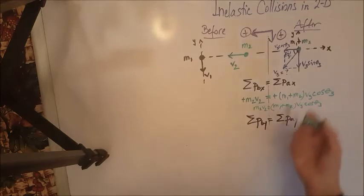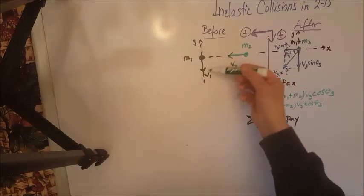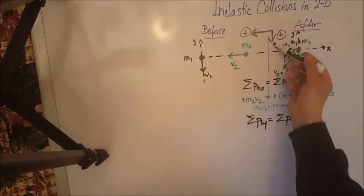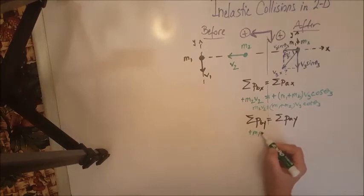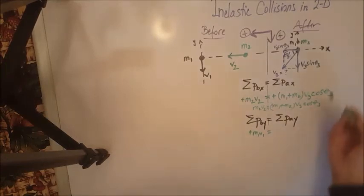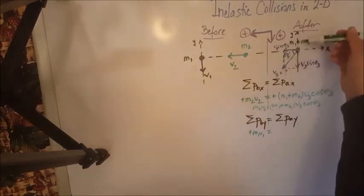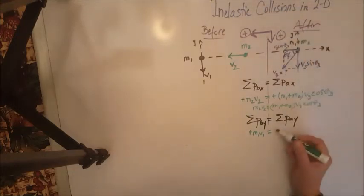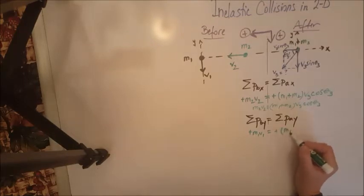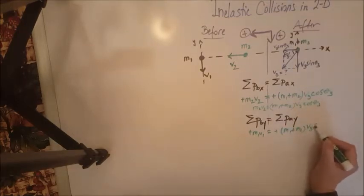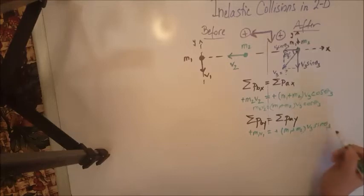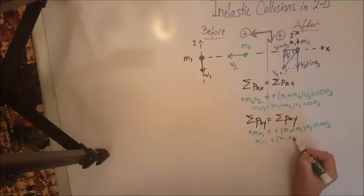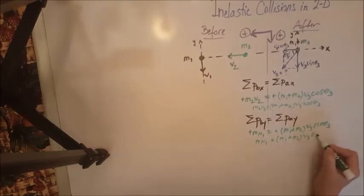For the Y, before collision only the first object has a Y velocity, and it is positive, so we have positive M1V1. After collision, M1 plus M2 moves with a Y velocity V3 sinθ3 in the positive direction, so we have positive (M1 + M2) V3 sinθ3. This simplifies to: M1V1 = (M1 + M2) V3 sinθ3.